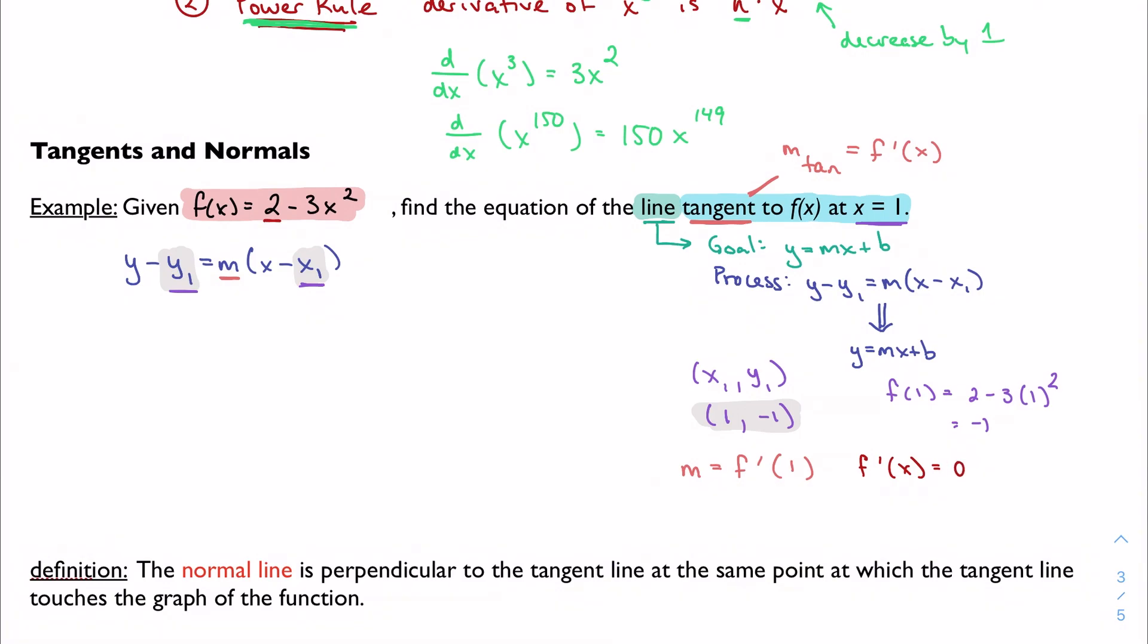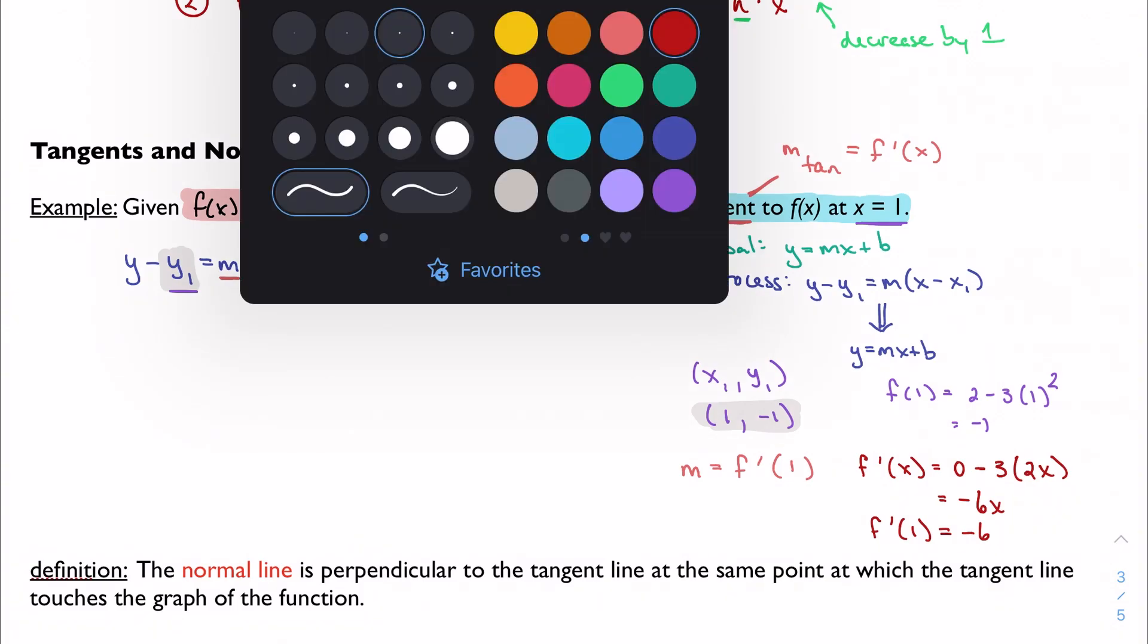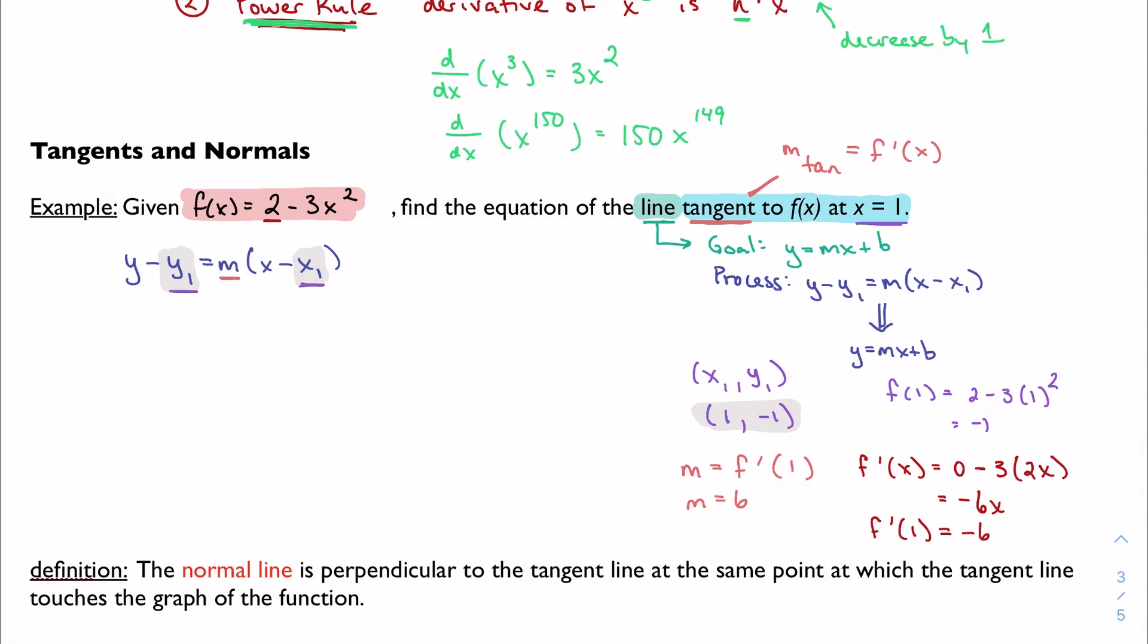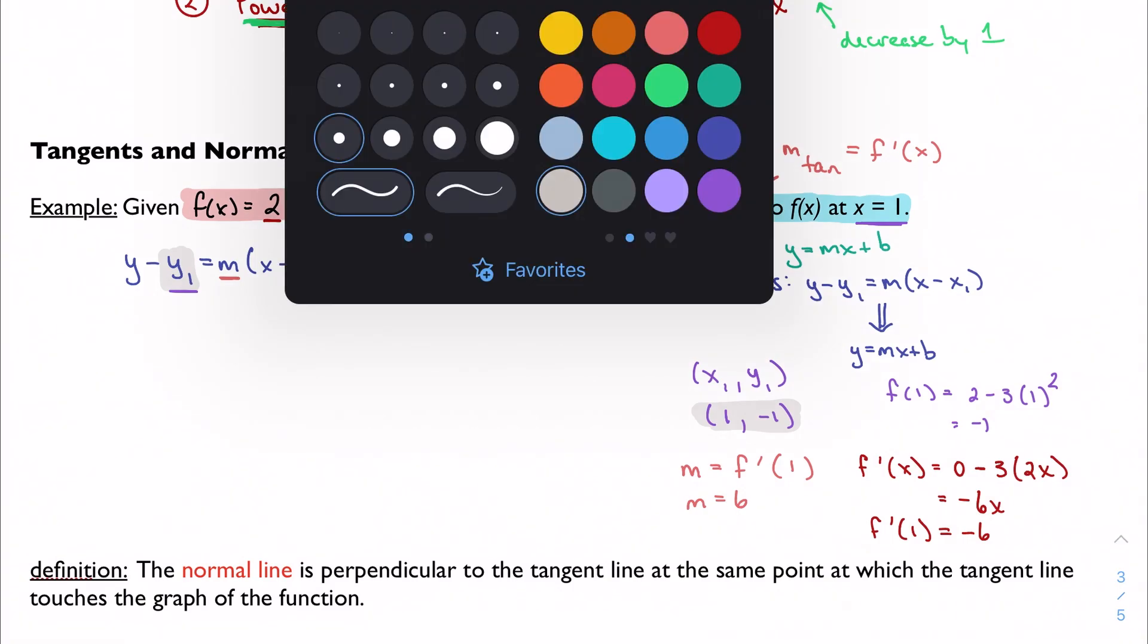And the derivative of 3x squared, well, we can leave the coefficient. And we know that the trick for x squared is to drop the power in front as a coefficient and then lower the power by one. So I get negative 6x in general. Well, specific to x equal to 1, I get negative 6. I just plug in 1 for x. So now I have my slope. And here's the other piece of the puzzle that I was missing.